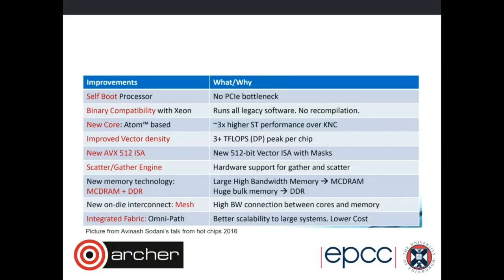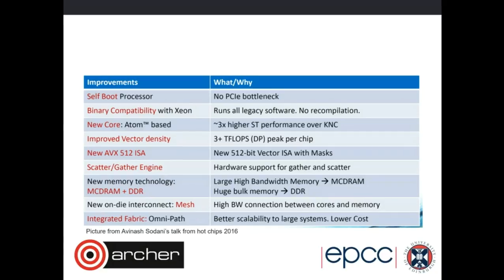There will also be versions of this processor where they bring the network onto the processor as well. At the moment they've got memory on the processor - the MCDRAM - but they are also going to be delivering ones with OmniPath. Intel are making a new network called OmniPath, and that will be on the processor as well.